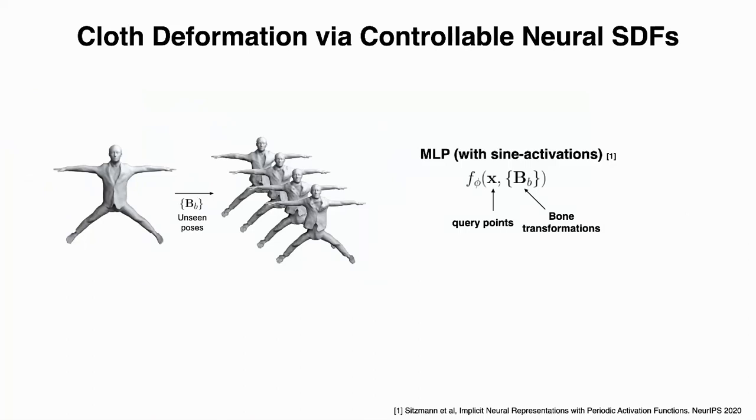First, let's have a look at how to represent these pose-dependent clothed human bodies with neural SDF functions. Here, we assume f is SDF function to represent the shape. This function f produces an SDF value for each query point x. A naive solution to model a controllable clothed human surface is to learn a conditional MLP or multi-layer perceptron, which takes query points and the target poses as inputs and predicts signed distance values. Here, we denote such MLP as f and parameterize it by phi.